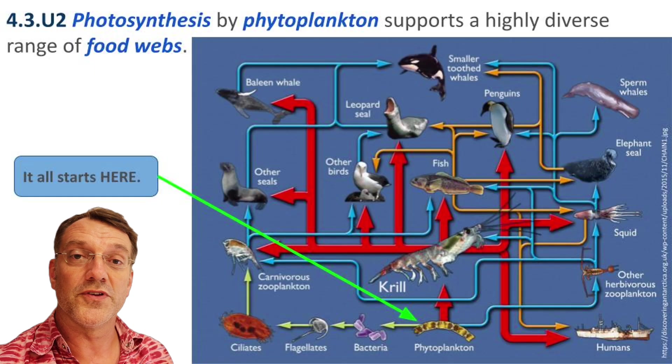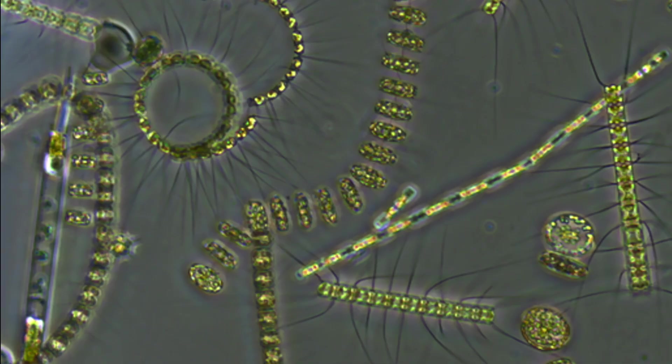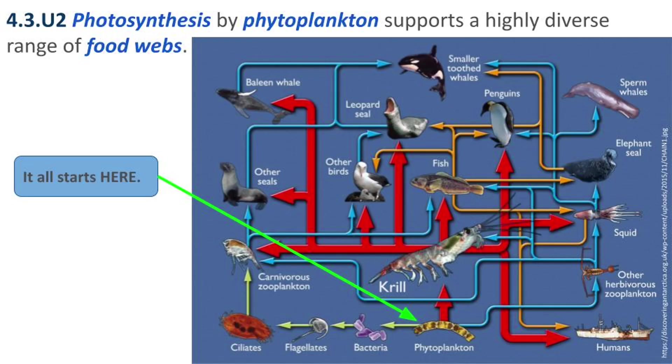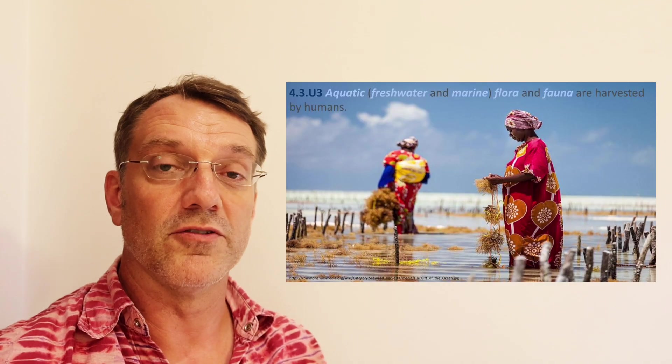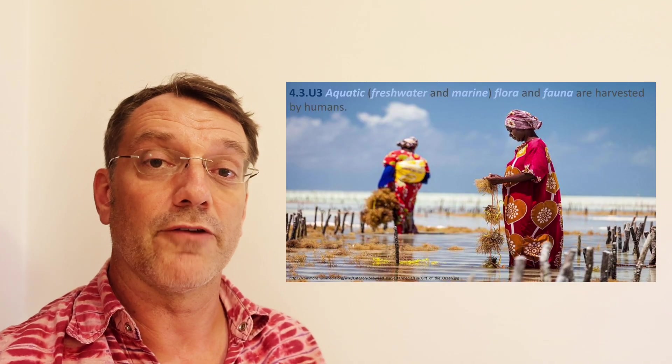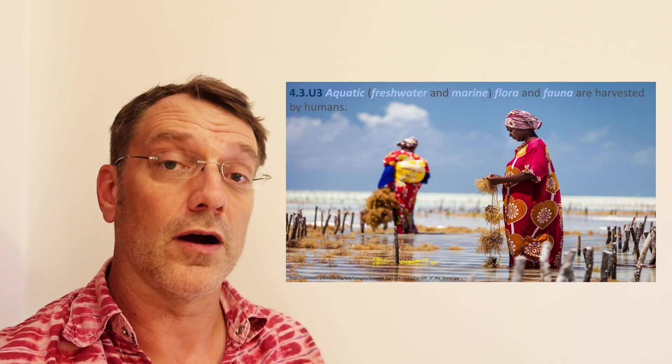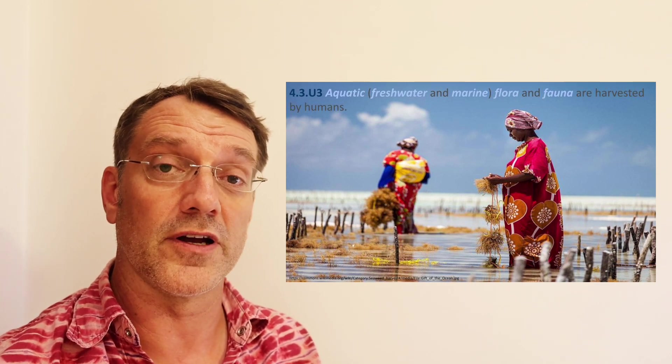Food webs in aquatic ecosystems begin with phytoplankton. There are two kinds of plankton: phytoplankton and zooplankton. 'Phyto' relates to light, so phytoplankton are photosynthetic plankton, whereas zooplankton are consumers that feed on the phytoplankton. Together they form the bottom trophic levels of aquatic ecosystems. People get food from aquatic ecosystems by harvesting flora — meaning plants — and fauna — meaning animals.